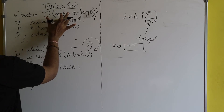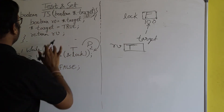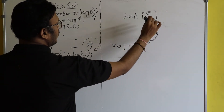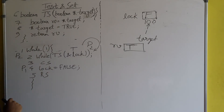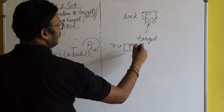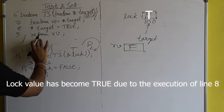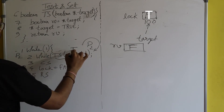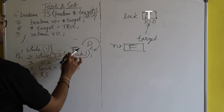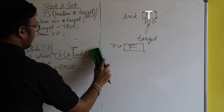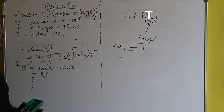In the TS definition, target points to the lock variable. Boolean rv = *target means rv will contain false, because *target is now false. Return rv returns false. Now false is returned, so while(false) means the while loop is broken — P2 gets entry inside the critical section. This is how mutual exclusion is guaranteed.